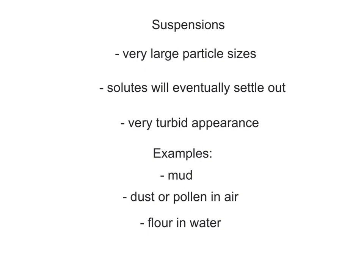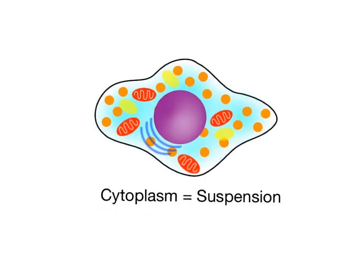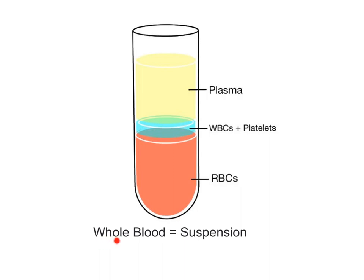Examples of suspensions found in the body include a cell's cytoplasm and whole blood. The cytoplasm is contained within cells and is composed of the watery cytosol that suspends the nucleus and large organelles, such as the endoplasmic reticulum and mitochondria. Whole blood is a suspension because it contains large formed elements, which are the blood cells, such as the red blood cells, white blood cells, and platelets, that are dispersed throughout the plasma and will settle out over time after withdrawal, as we see here in this test tube. The heaviest, densest cells, the red blood cells, settle out on the bottom, while the less dense, white blood cells and platelets settle out just below the plasma.